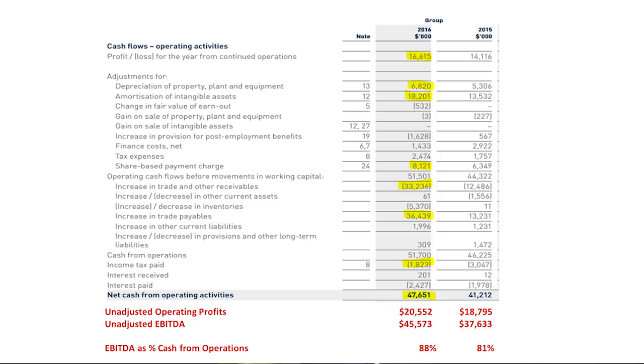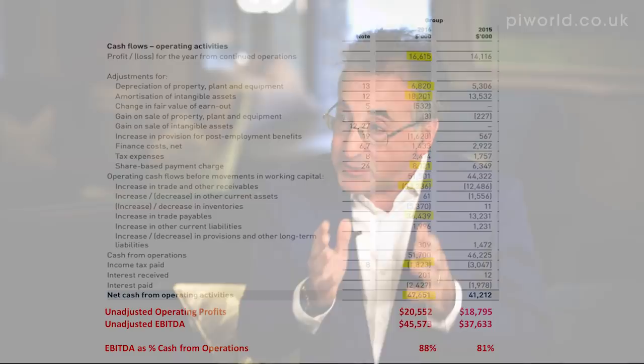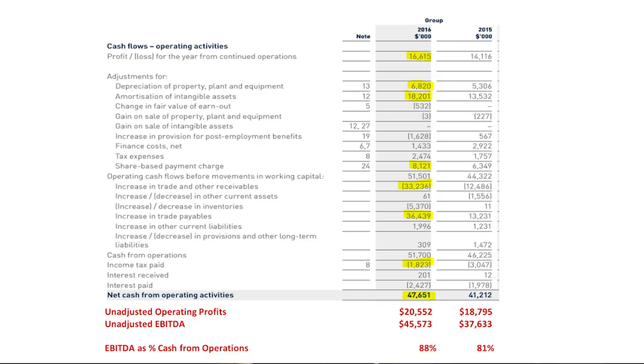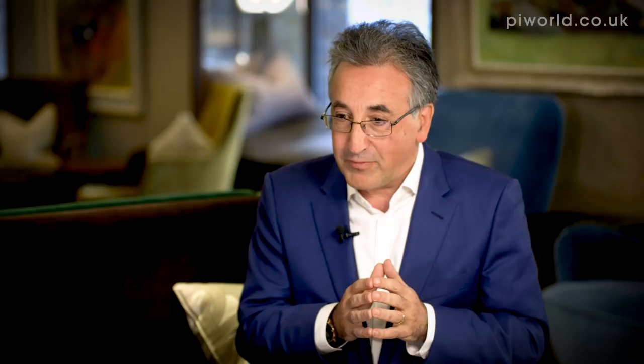That number in my mind equates to the operating profit in the P&L account, and I often like to compare one with the other. In this case, Tellit's number looks very impressive — its operating cash flow is $47 million but its operating profits are only $20.5 million. In part that's because they've added back some $24 million on depreciation and amortisation. The story looks really good from that point of view, and some investors who only focused on that metric would think this is a very cash-generative business.